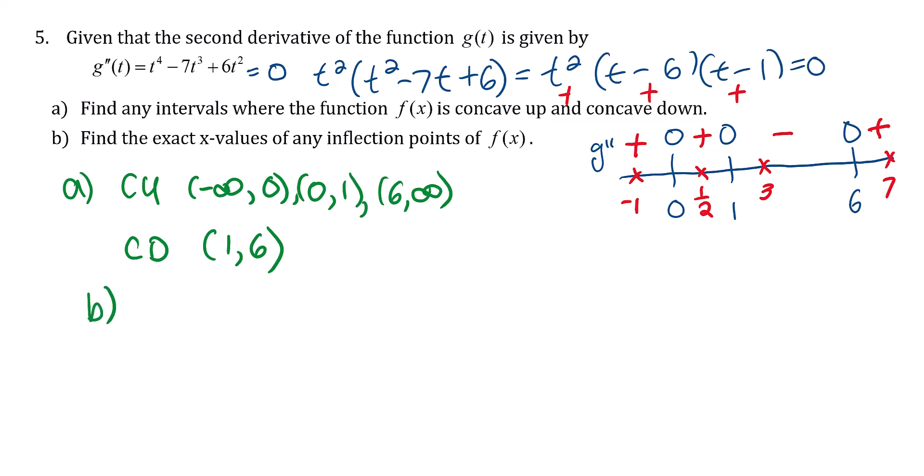Let's do part B. It wants the x values of any inflection points, not the y values. The inflection point happens where the second derivative changes signs. The second derivative goes from positive to negative at 1, so 1 is an inflection point. At 6, it's negative to the left and positive to the right, so 6 is also an inflection point.